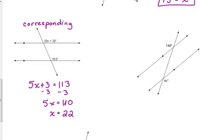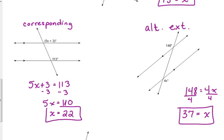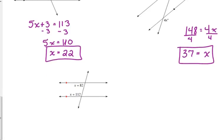How about the one here on the right? We've got 148 degrees on the top and 4x on the bottom. Alternate exterior. Good. They're on opposite sides of the transversal. They're outside of our parallel lines. Alternate exterior. So alternate. Any of our alternate ones are equal. So 148 is equal to 4x. What is 148 divided by 4? 37.